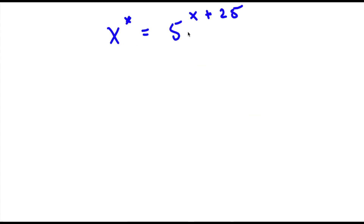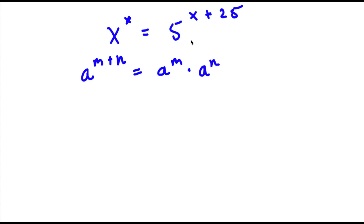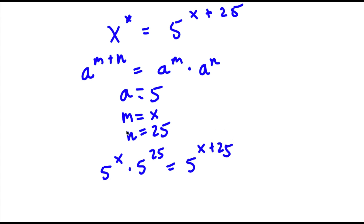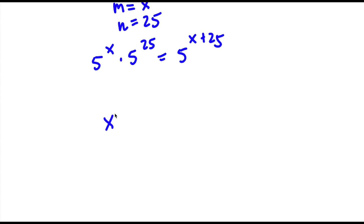So now we have x to the power of x is equal to 5 to the power of x plus 25. The first thing is: if we have something in the form a to the power of m plus n, this equals a to the power of m times a to the power of n. So here a is 5, m is x, and n is 25. So now we have 5 to the power of x times 5 to the power of 25 on the right side.